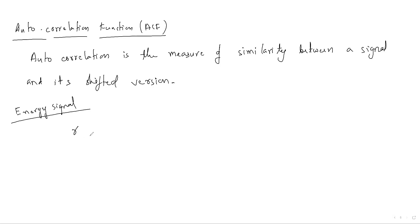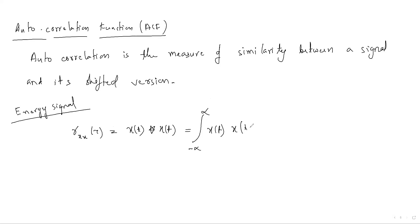For an energy signal, the autocorrelation function is written as Rxx(τ) = integral from minus infinity to infinity of x(t)·x(t−τ)dt. Here both signals are the same. When a problem is given, you must first find whether the signal is a power signal or an energy signal, then apply the appropriate formula.